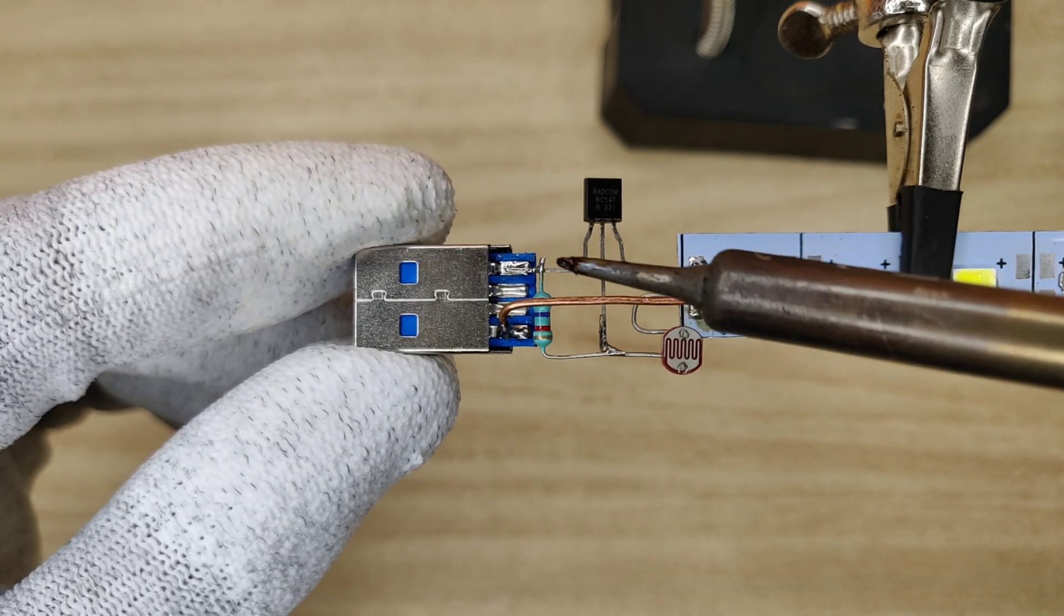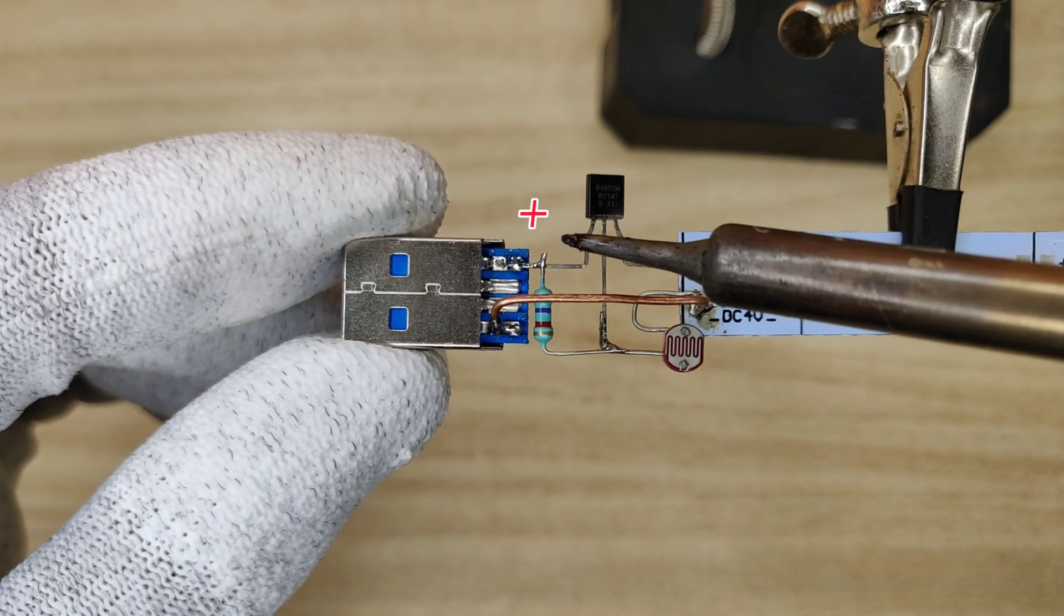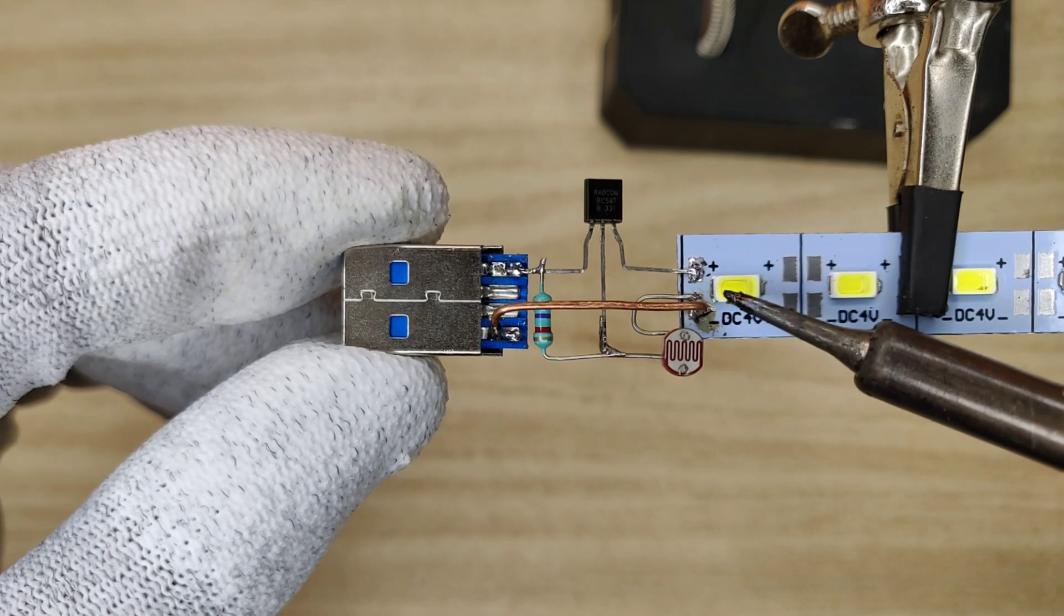Solder input DC positive with collector of transistor and solder negative directly with light negative.